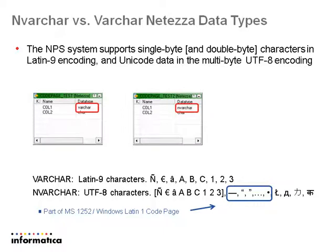First of all, nvarchar versus varchar. The Netezza system supports single byte data and double byte characters with extended ASCII using the Latin 9 encoding. For Unicode data, it's going to use an nvarchar data type to distinguish the code page. We'll show you some examples of the data here.